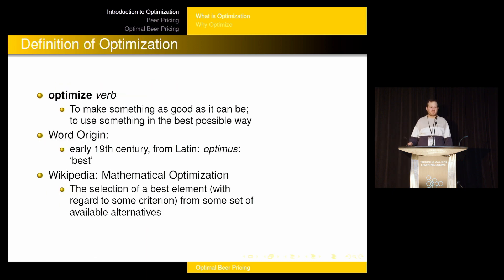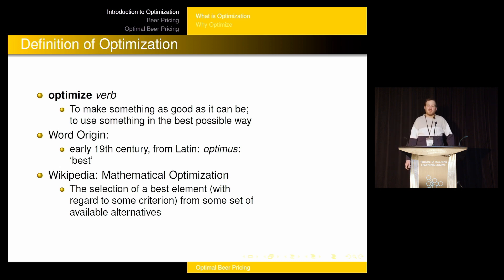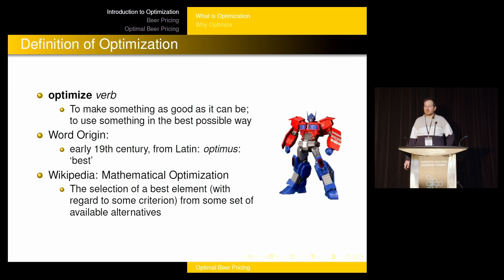What is optimization? While we could look it up, 'optimize' is a verb meaning making something as good as it can be. The word origin comes from Latin 'optimus.'